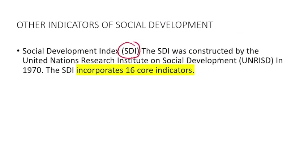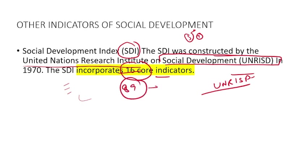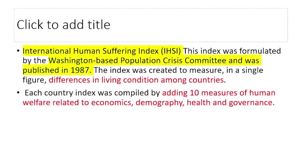The Social Development Index was constructed by the United Nations Research Institute on Social Development (UNRISD). It contains 16 core indicators — you don't need to memorize all 16. When an index has 3 or 4 indicators, you should remember them, but memorizing 16 or even 89 indicators is unnecessary.